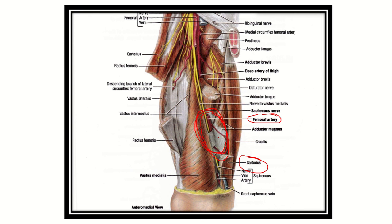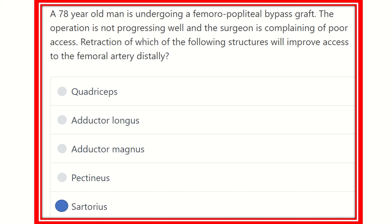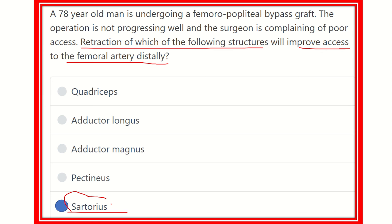When the sartorius muscle is removed, the femoral artery becomes visible and easily accessible. The sartorius muscle must be retracted to improve access to the femoral artery distally. This structure is part of the adductor canal — also called Hunter's canal or the sub-sartorial canal — meaning it runs under the sartorius. Therefore, for femoral-popliteal bypass graft, the sartorius muscle should be retracted for better access.